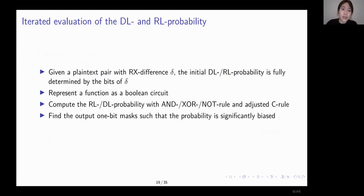So given an input rotational difference delta, the initial probability is fully determined. And we can evaluate the round function by regarding it as a circuit with Boolean operations. So we can compute the rotational differential linear probability round by round and find out the position of the output bits that is the most biased.